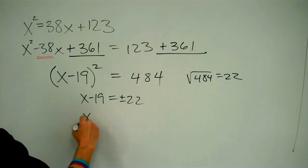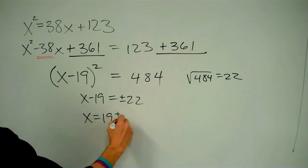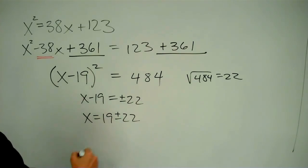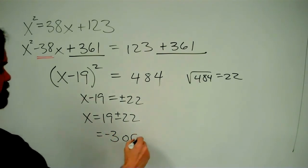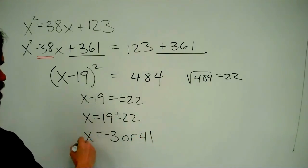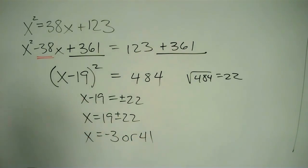Adding 19 to both sides, I get x equals 19 plus or minus 22. 19 minus 22 is negative 3. 19 plus 22 is 41. And those are my two possible values of x.